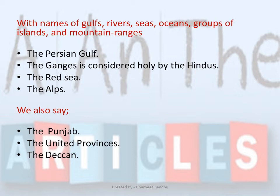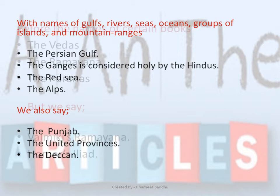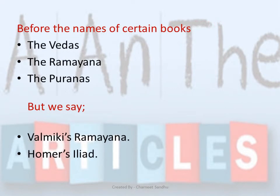We use 'THE' with names of gulfs, rivers, seas, oceans, groups of islands and mountain ranges. For example: 'The Ganges is considered holy by the Hindus.' We also use 'THE' before the names of certain unique books, for example: the Vedas, the Ramayana. But when we add a proper noun to it, we do not use the article — so we say 'Valmiki's Ramayana'.